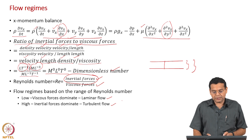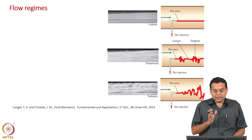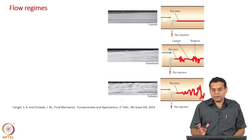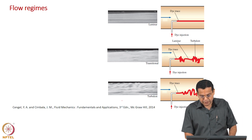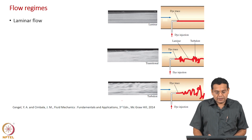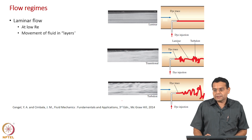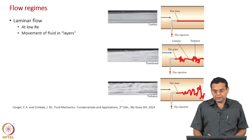Now, what are the characteristics of each flow? Different flow characteristics prevail in different flow regimes, as shown in the figures taken from Cengel and Cimbala. Starting with laminar flow — observed at low Reynolds number — the word 'lamina' means layers, so movement of fluid takes place in layers.